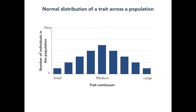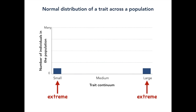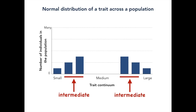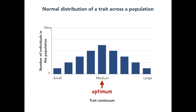In such a scenario, we have fewer individuals with the extreme values of the trait — in this example, small and large size. A moderate amount of individuals with the intermediate values of the trait, smallish and large-ish, and a lot of individuals with the optimum of the trait, in this case medium-sized.